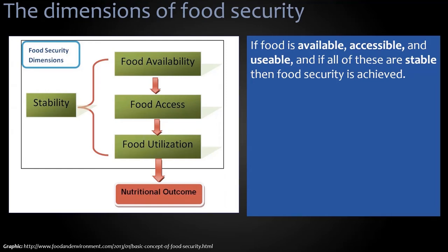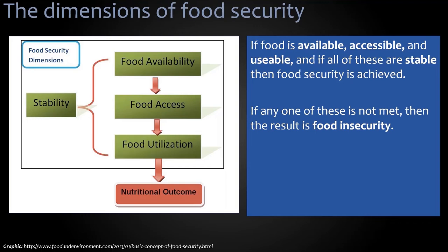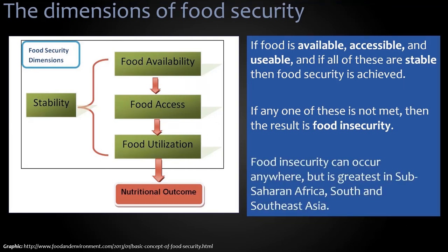— then food security is achieved. But if any one of those is not met, then the result can be food insecurity. So you can see there are multiple dimensions here, and if any of those are not met, then we can face a food security problem. Now this can occur anywhere in the world, but it's greatest in Sub-Saharan Africa and South and Southeast Asia.